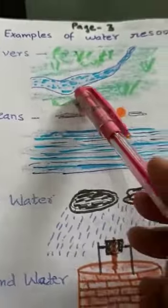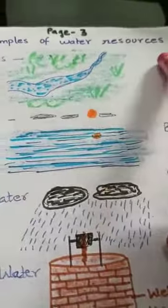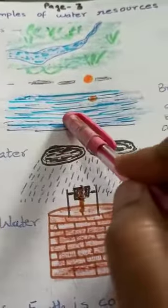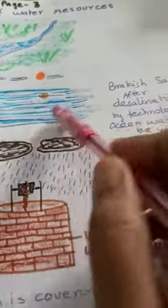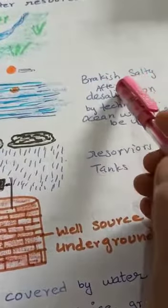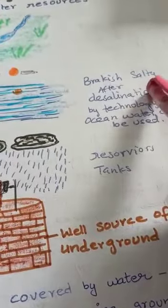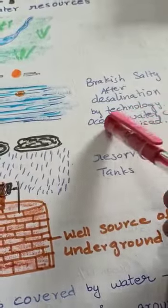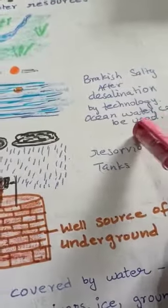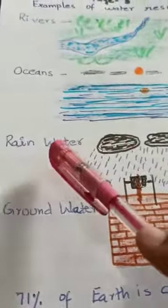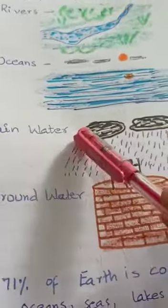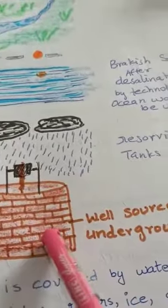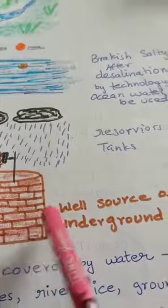Now we will see examples of water resources. Number one are rivers, second are oceans. Ocean water is brackish and salty, but after the use of technology — after desalination — ocean water can be used in future. Next water resources are rainwater and groundwater, which we take out with the help of boring pumps and wells.